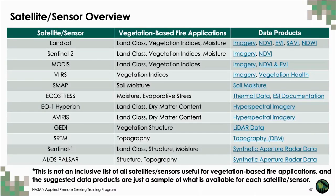I've compiled an overview slide for your reference. The data products column has links to products you might find useful. Keep in mind this isn't an inclusive list — there may be other satellite sensors, platforms, or data products useful for your own vegetation-based fire risk assessment. View this as a way to get started exploring these kinds of data through the lens of fires.